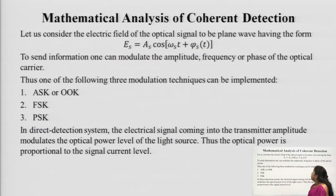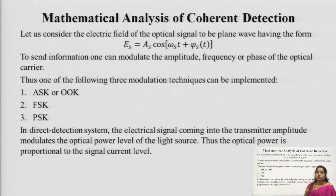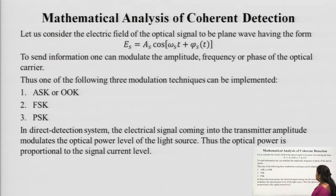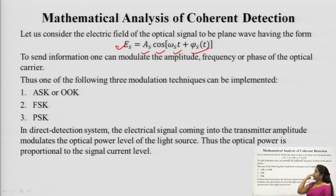Now comes the mathematical analysis of coherent detection. We take one optical signal whose electric field is given by E_s = A_s cos(ω_s·t + φ_s(t)), where ω_s gives the frequency and φ_s gives the phase. This is the general expression of the electric field of the optical signal. As shown in the block diagram, after the signal is generated, it must be modulated.